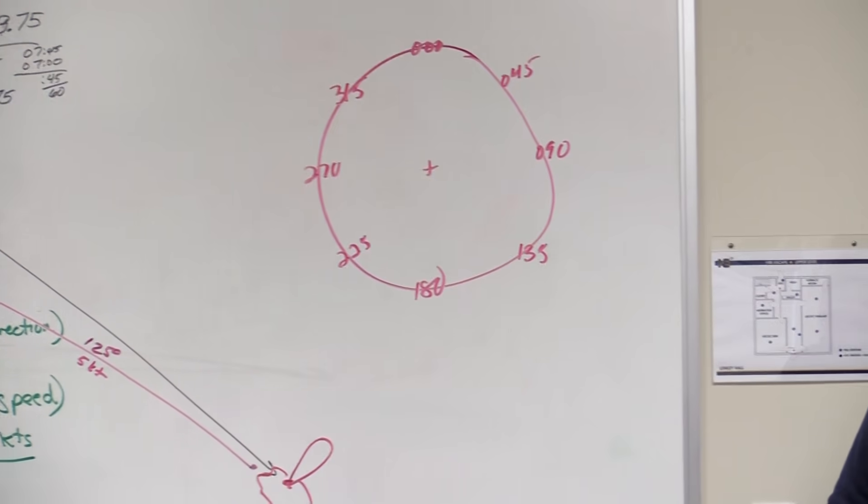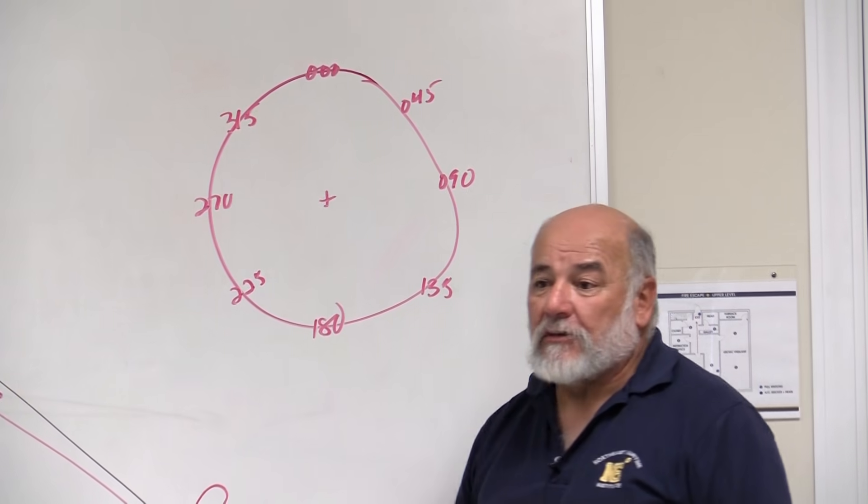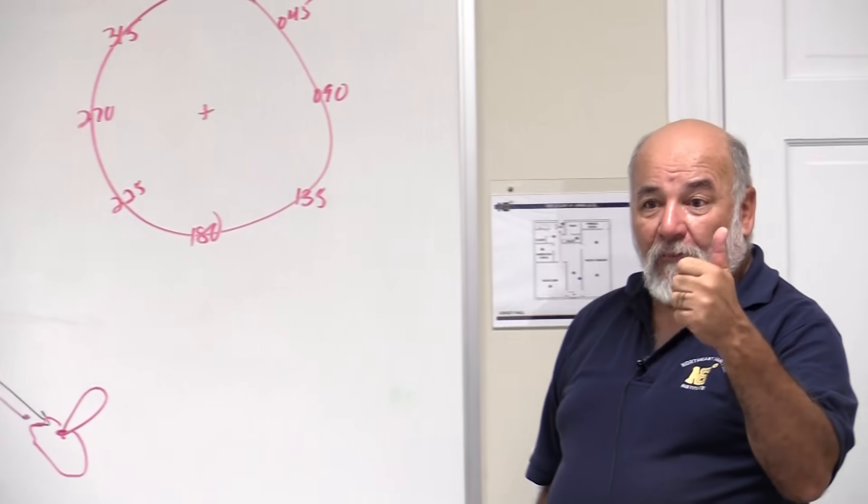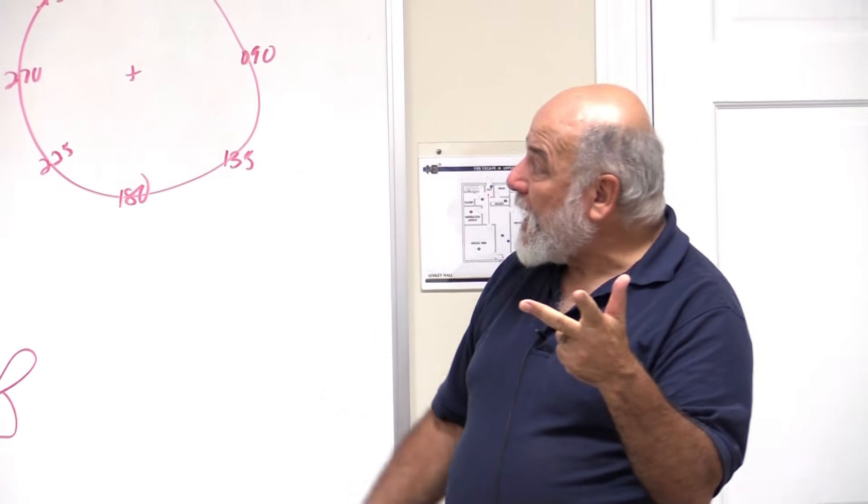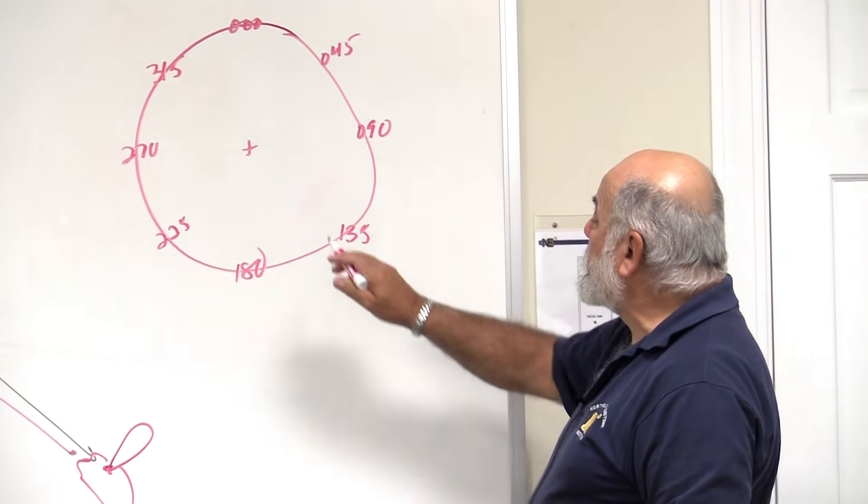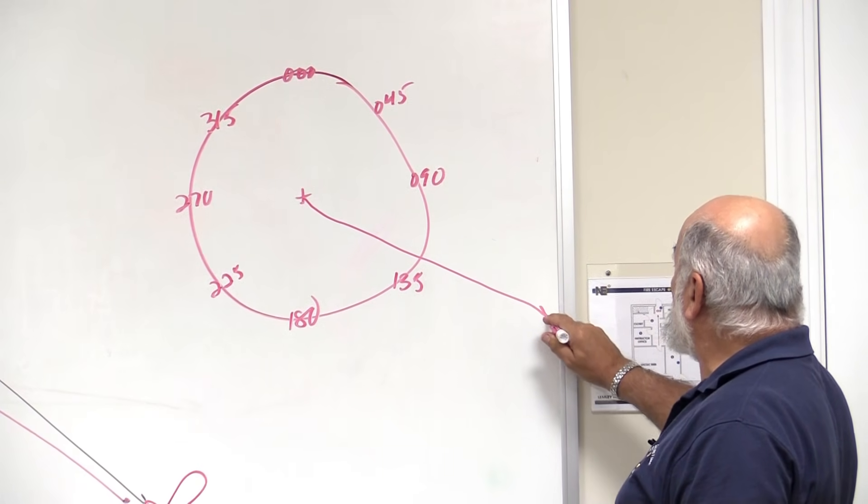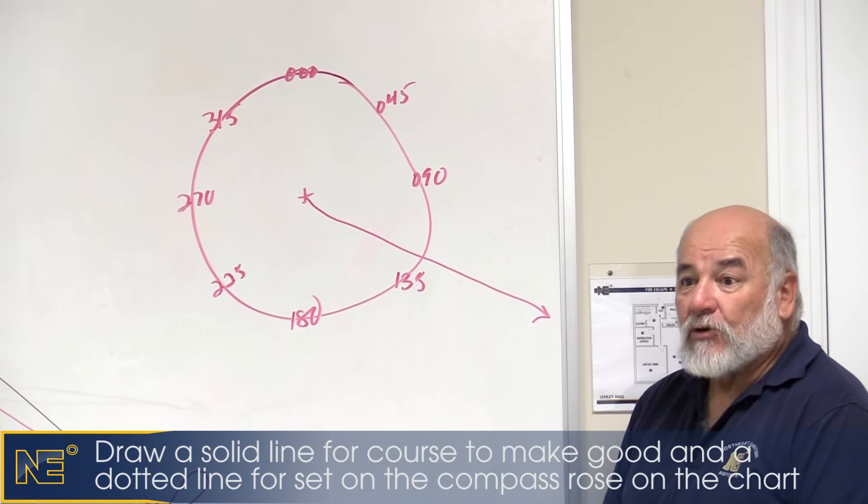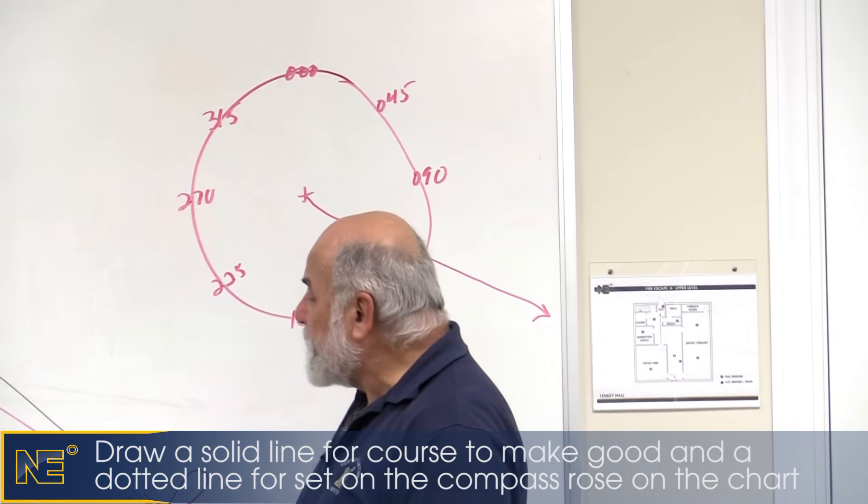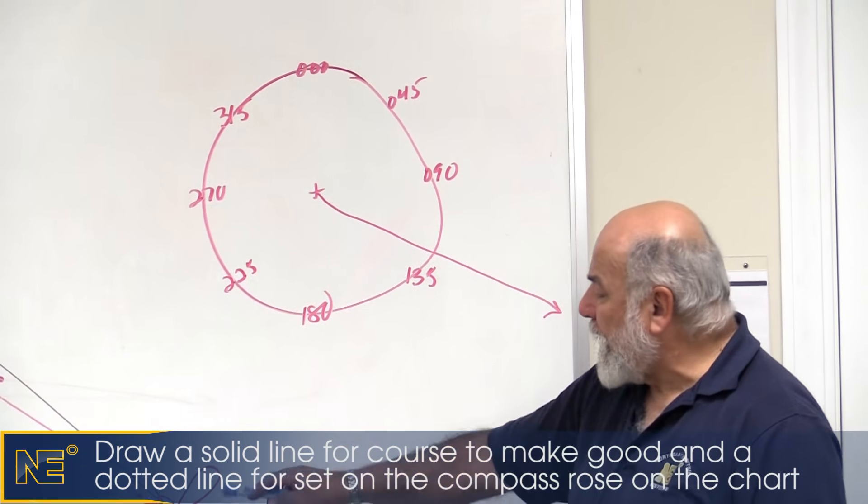Course to steer. What course would I steer to make good, to be on course of 125? Well, I have four items. I have my course, my speed, my set, and my drift. So my course, I'm going to draw my course on the compass rose, 125 degrees. And course is always drawn in a solid line. That's the course I want to make good, 125, to get to that light.